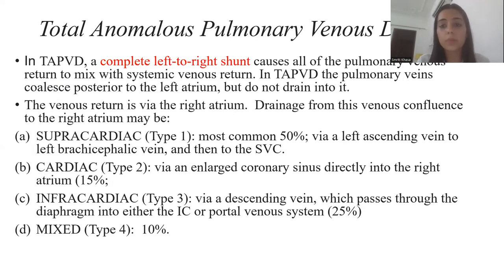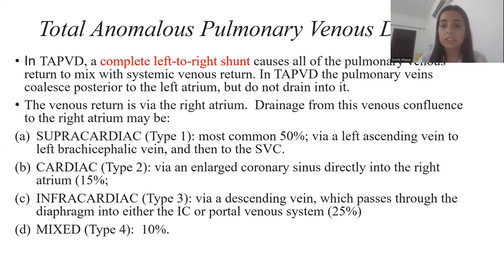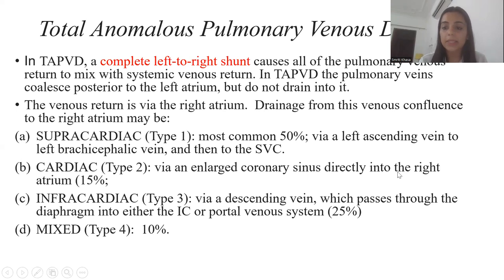Now discussing total anomalous pulmonary venous drainage: in TAPVD, a complete left-to-right shunt causes all of the pulmonary venous return to mix with the systemic venous return. The pulmonary veins coalesce posterior to the left atrium but do not drain into it. On the basis of drainage into the right atrium, it is divided into four types. Type 1 is supracardiac, the most common at 50% of cases — the drainage is via the left ascending vein, to the left brachiocephalic vein, and then to the superior vena cava. Type 2 is cardiac, in which drainage occurs via an enlarged coronary sinus directly into the right atrium.